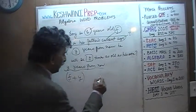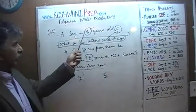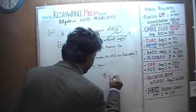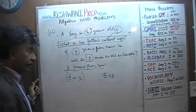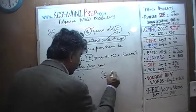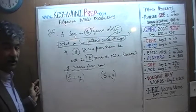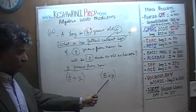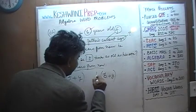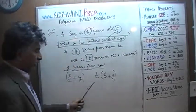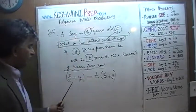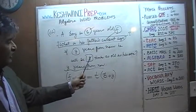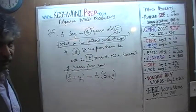Similarly, the boy is b years old today. Therefore, y years from now he is going to be B plus Y. We are told that at that point — y years from now — the father's age is going to be t times the boy's age. Father's age equals t times boy's age, y years from now. That's it, we are done.